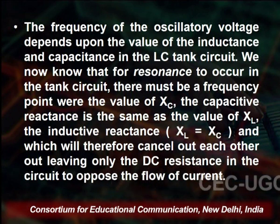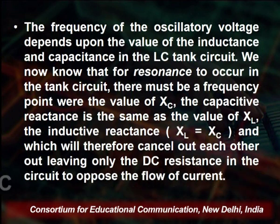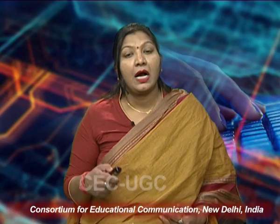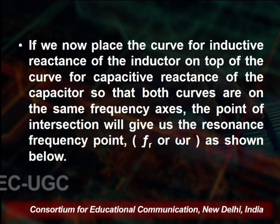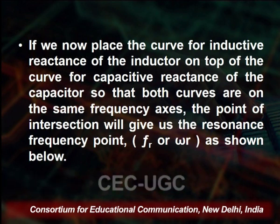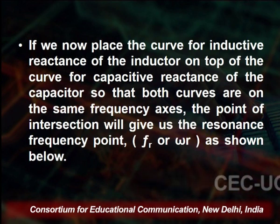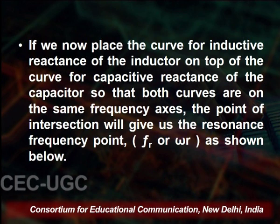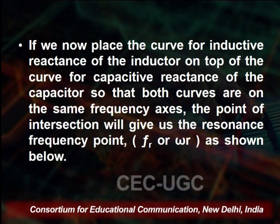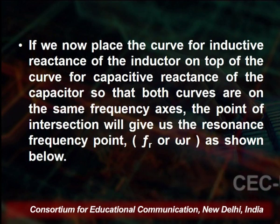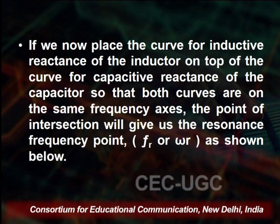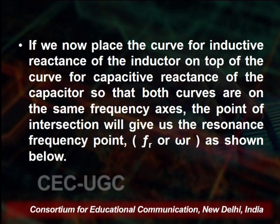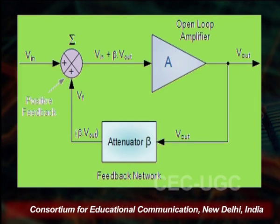At resonance, X_L equals X_C, which will cancel out each other, leaving only the DC resistance in the circuit to oppose the flow of current. If we place the curve of inductive reactance and the curve of capacitive reactance on the same frequency axis, the point of intersection gives the resonance frequency point F_R, which is the resonant frequency, also written as ω_R.